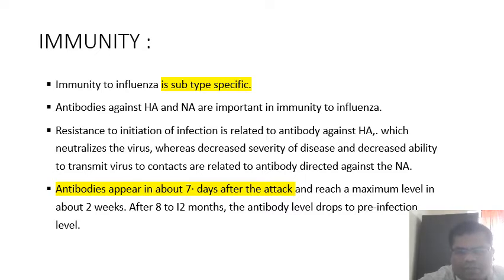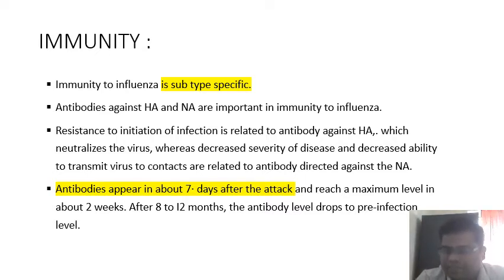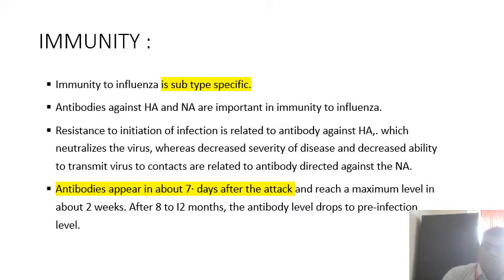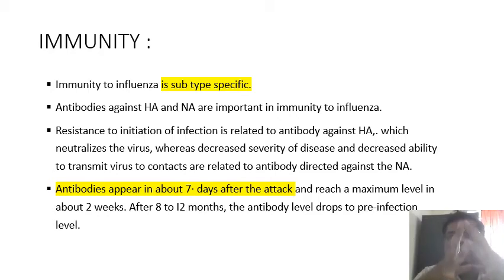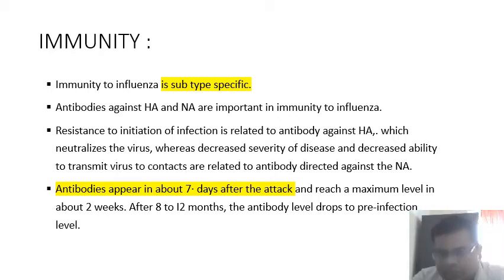Immunity to the influenza virus is subtype-specific. Antibodies against hemagglutinin (H) and neuraminidase receptors are important for immunity. Resistance to initiation of infection is related to the antibody against hemagglutinin, which neutralizes the virus and decreases its activity. Antibodies will usually occur after seven days of infection, so if you test on the second or third day, the antibody test will be negative, giving a false negative result.